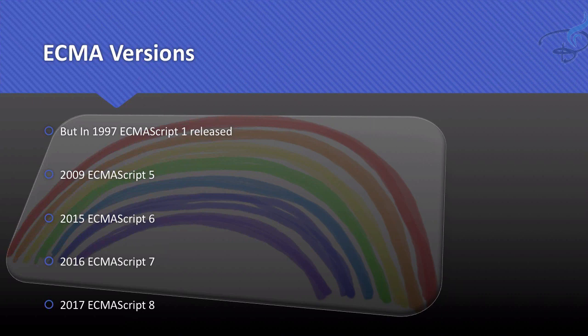In 2009, ECMAScript 5 was released — but what about versions 2, 3, and 4? After ECMAScript 1, versions 2 and 3 were released, and they worked on ECMAScript 4 but ultimately decided to skip it and release version 5 instead. So in 2009 ECMAScript 5 was released, then in 2015 ECMAScript 6 was released, and in 2016 ECMAScript 7, and then ECMAScript 8.